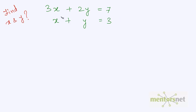Let us take another example now. These are the two equations, but you will find that it is difficult to remove one of the variables directly by simply subtracting or adding equations 1 and 2. Let us name these equations first — this is equation 1 and this is equation 2.